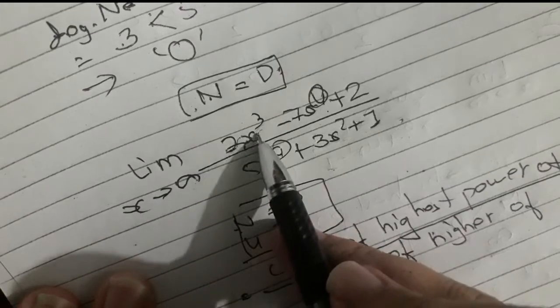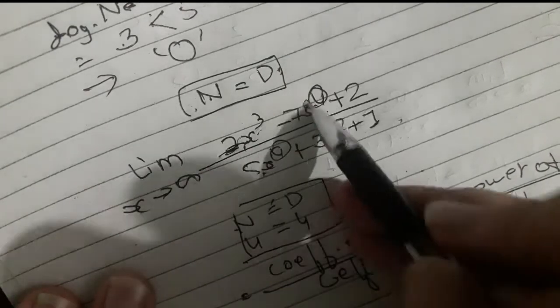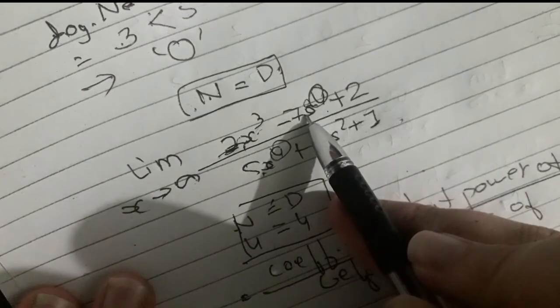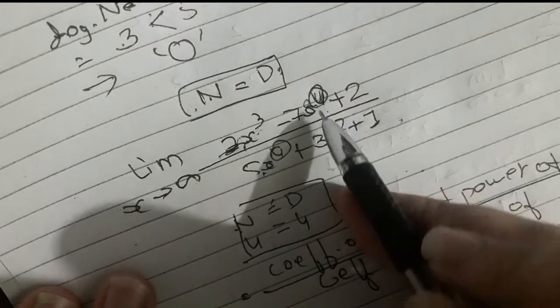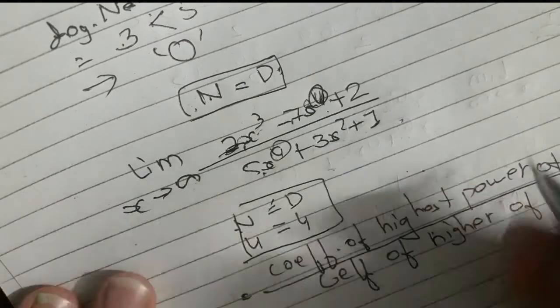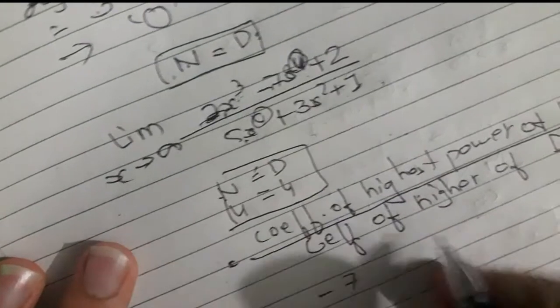When degrees are equal, we take the ratio of the leading coefficients. The highest power coefficient in the numerator divided by the highest power coefficient in the denominator gives the answer.